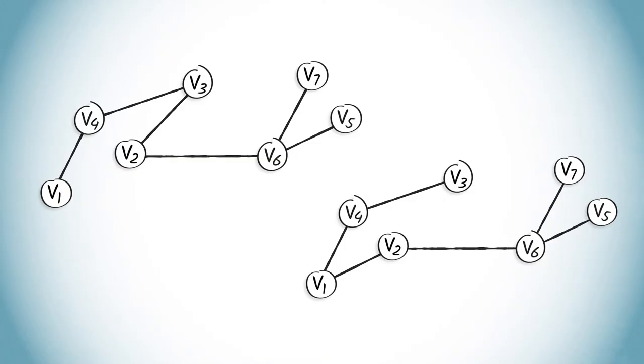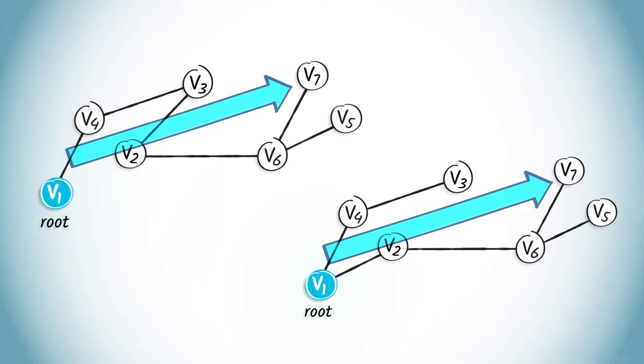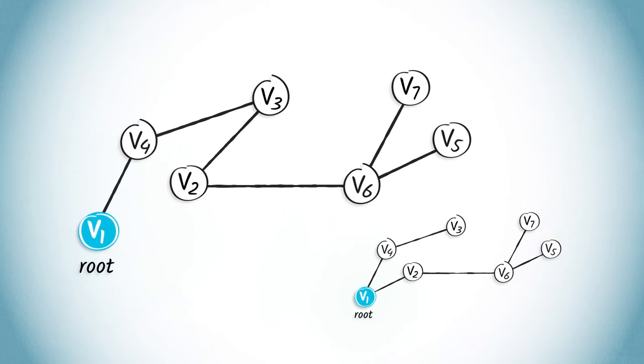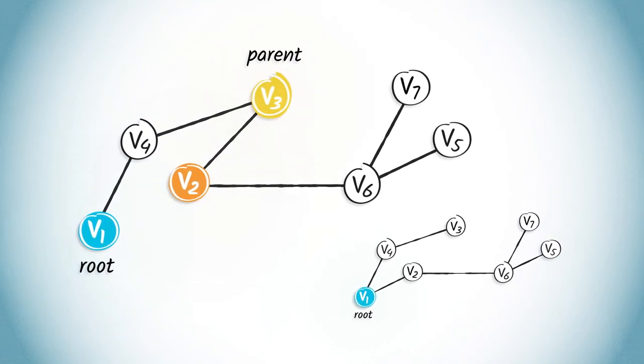A rooted tree is a tree in which we designate a particular vertex as the root, which is also sometimes known as the origin. In this case, we will consider V1 as the root because it's our starting position. Therefore, the edges of this rooted tree have a natural orientation away from the root. In a rooted tree, the parent of a vertex is the vertex connected to it on the path from the root. For example, the parent of V2 is V3 in the tree on the left. Every vertex except the root has a unique parent.